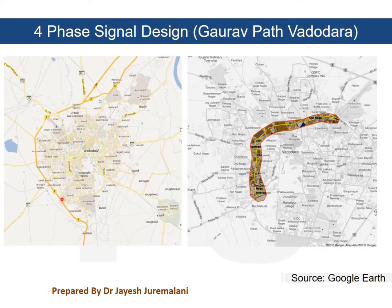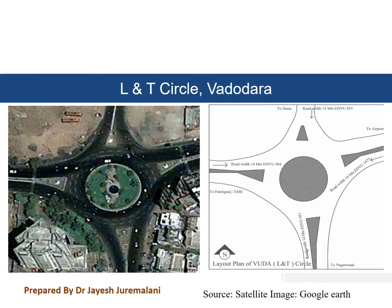This example is taken from an intersection in Vadodara city, Gujarat. The image is from Google Earth — it is known as the L&T circle, or Vooda circle, on Gaurav Path, a 10-kilometer road with 12 intersections. The intersection is where two crossroads meet. One road goes from Fatehganj to the airport (North-South), and the other goes from Sama to Karelibag (East-West).